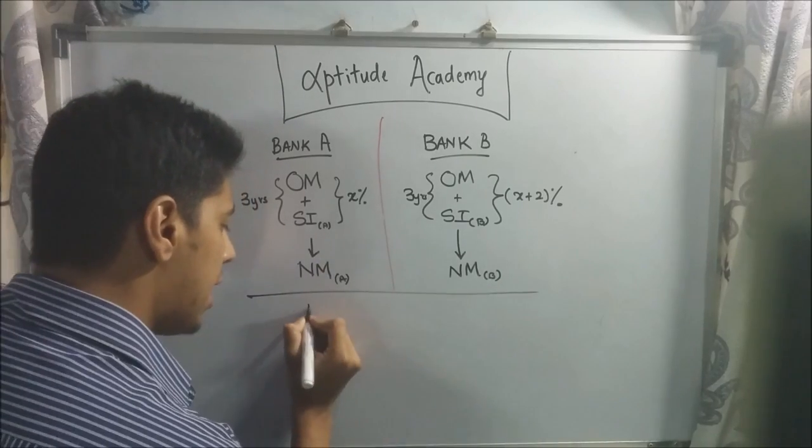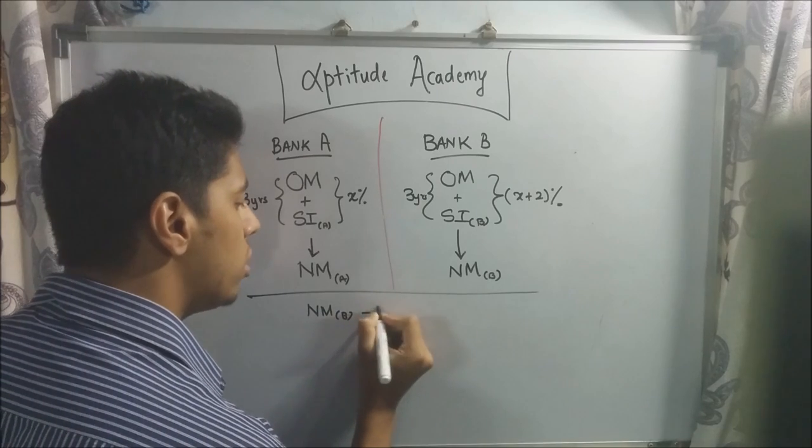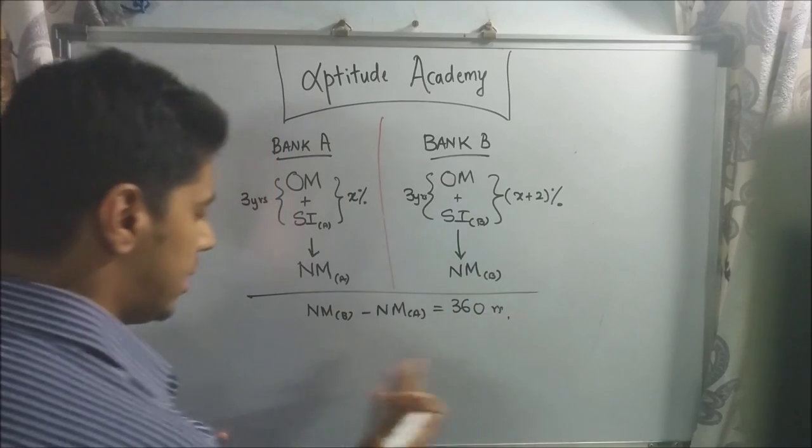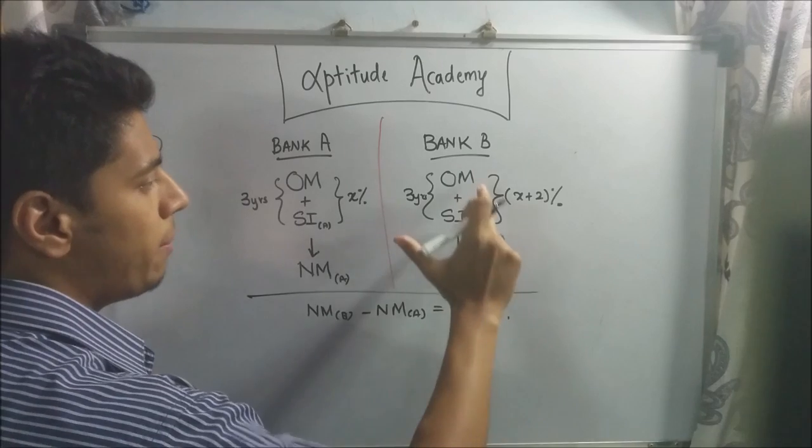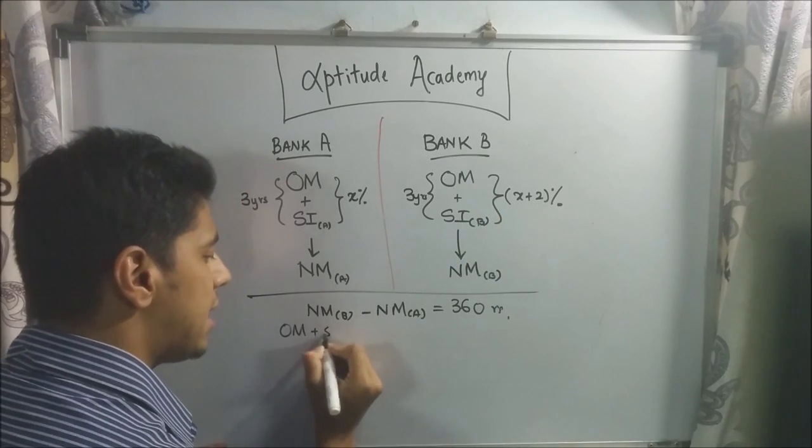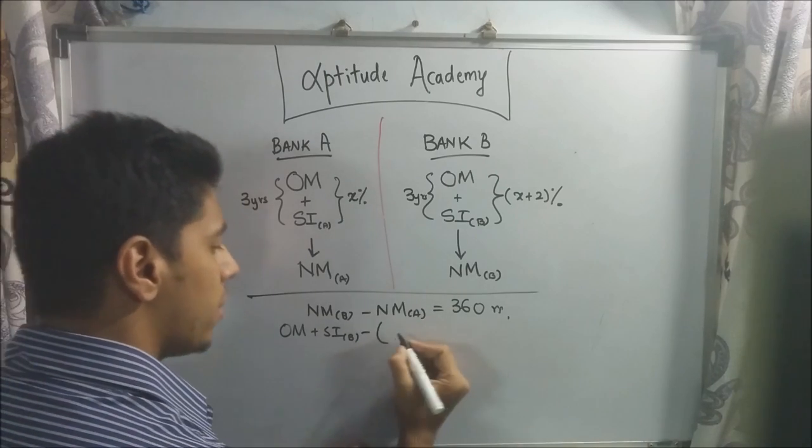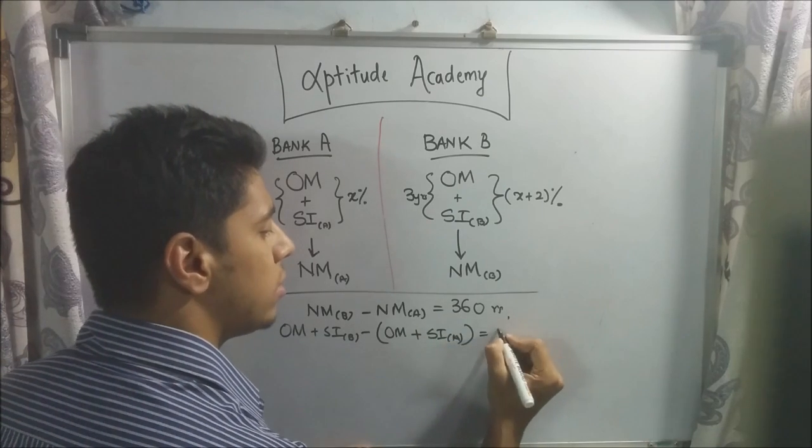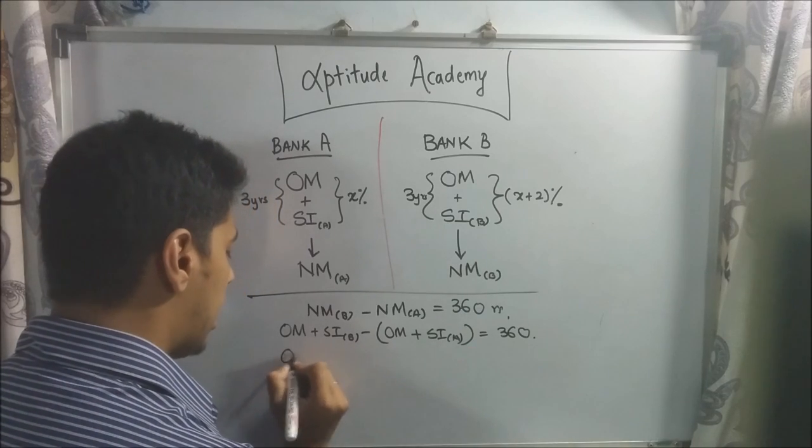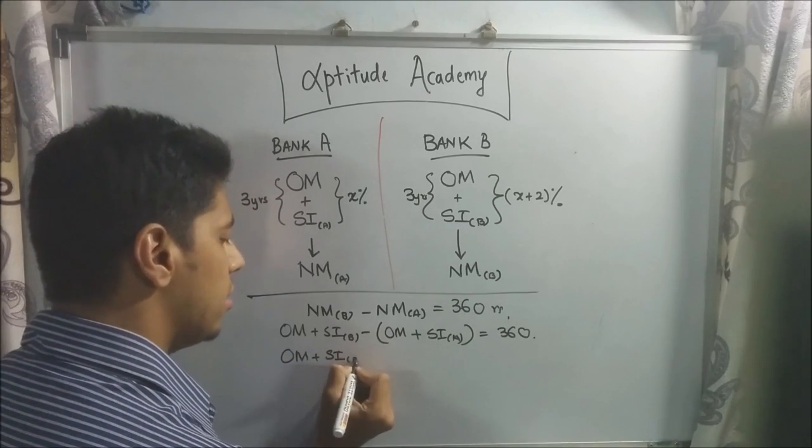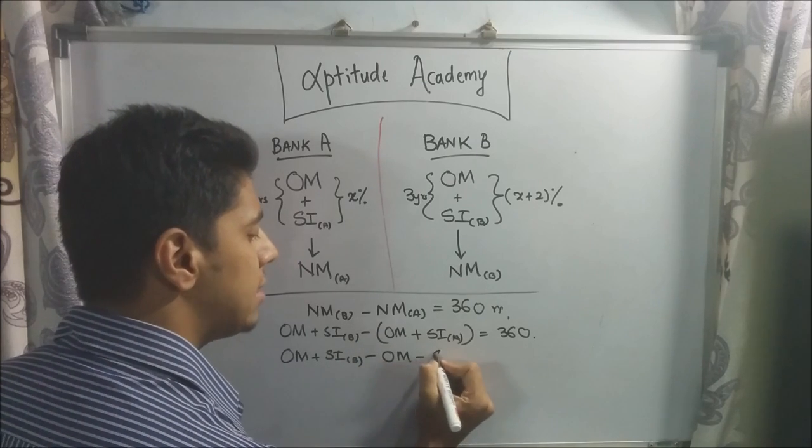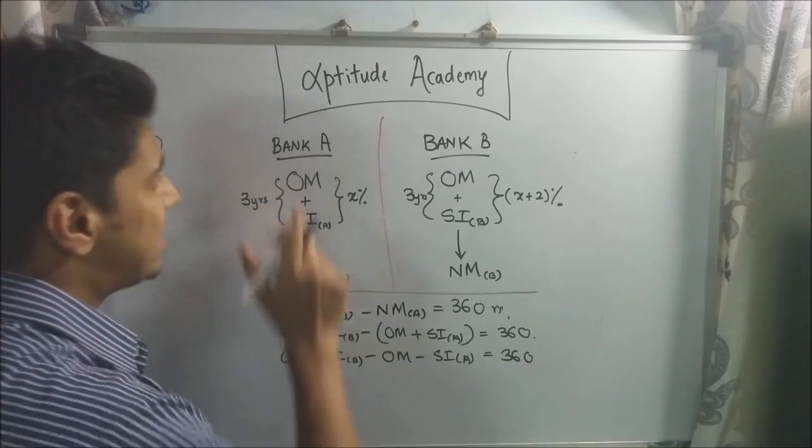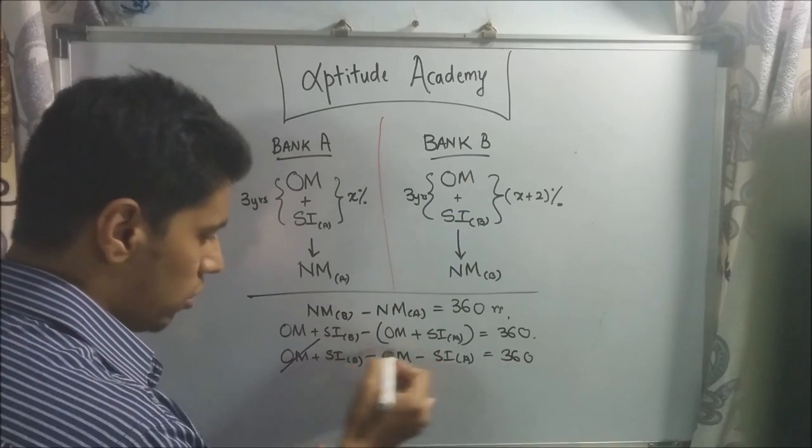In the problem, they've told you that NM B is more than NMA by 360 rupees. Now, let's just solve it a little bit. NM B is OM plus SI B. So OM plus SI of B minus NMA, which is OM plus SI of A, equals 360. Now, if you remove the bracket, it'll be OM plus SI of B minus OM minus SI of A equals 360. Now, OM, OM is common because it's the same amount of money you've put in different banks. So OM gets cancelled.